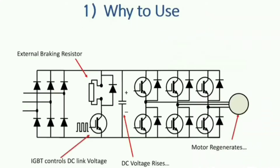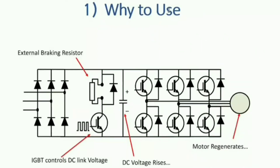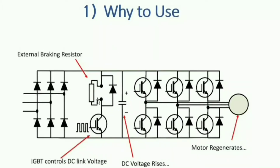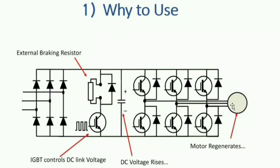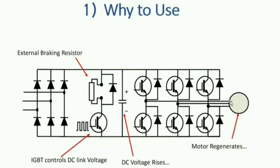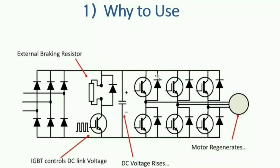First topic: why do we use braking resistors? Whenever we run a motor at say 1500 RPM or 1800 RPM and we suddenly stop the motor, the motor acts as a generator and creates back EMF. If we don't have freewheeling diodes, the IGBT will be damaged. The back EMF goes through the diodes to the capacitor bank and increases the DC voltage.